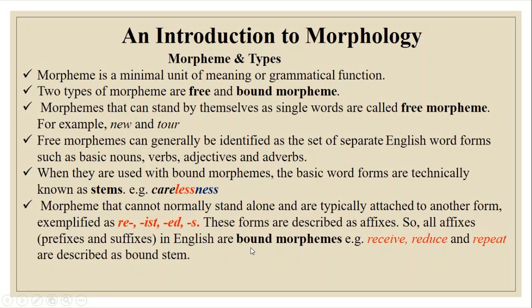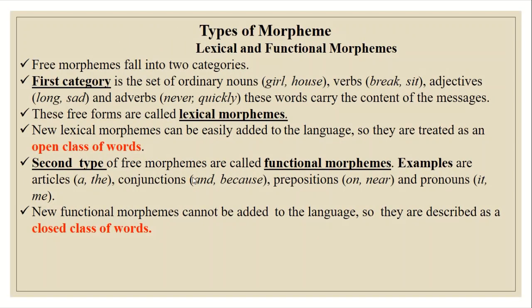In this lecture we are talking about the types of morphemes. In the last slide we discussed free and bound morphemes, but now we are going to talk about the lexical and functional categories of morphemes. Free morphemes fall into two categories — keep in mind that lexical and functional morphemes are free morphemes; they are not bound ones.